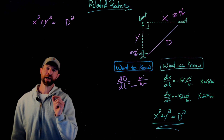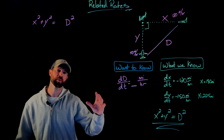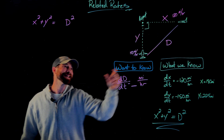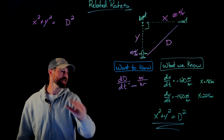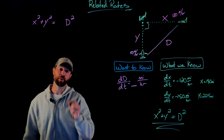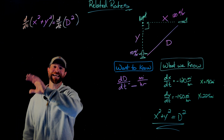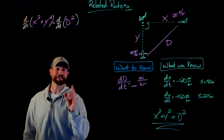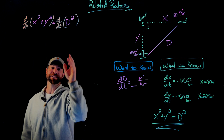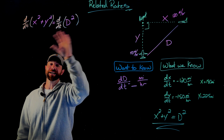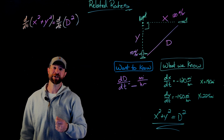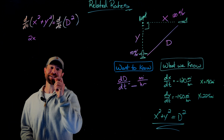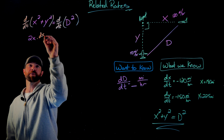Now comes the real calculus. To get a relationship between the rates, I'm going to take this equation and differentiate with respect to time. x, y, and d all vary with respect to time, so none of them are constant. When I differentiate x squared with respect to t, I use the power rule to get 2x, then the chain rule to multiply by the derivative of x, giving me dx/dt.